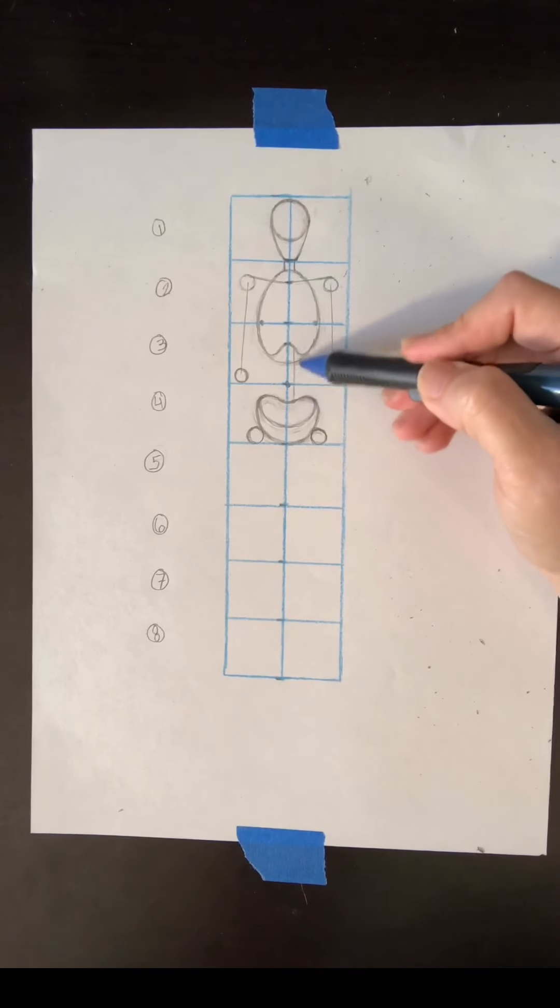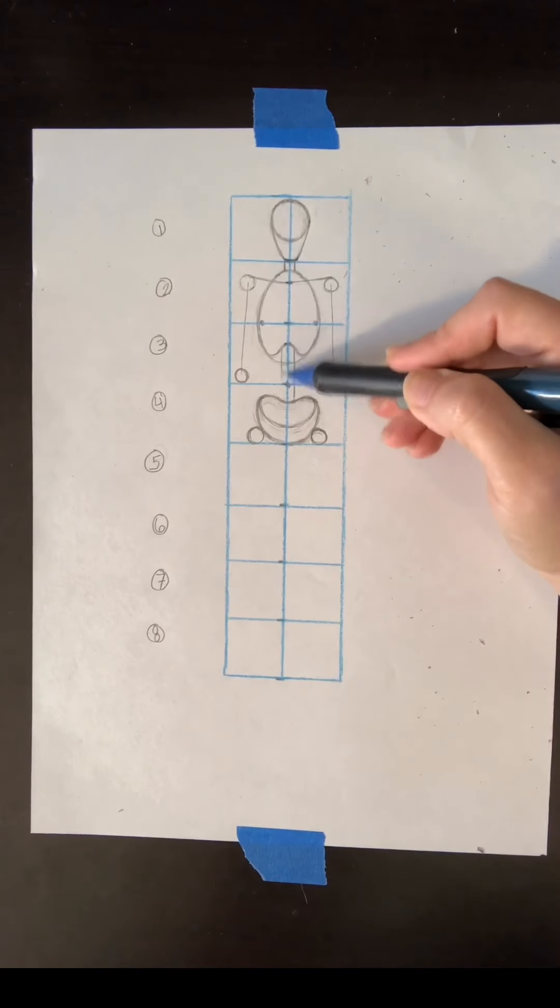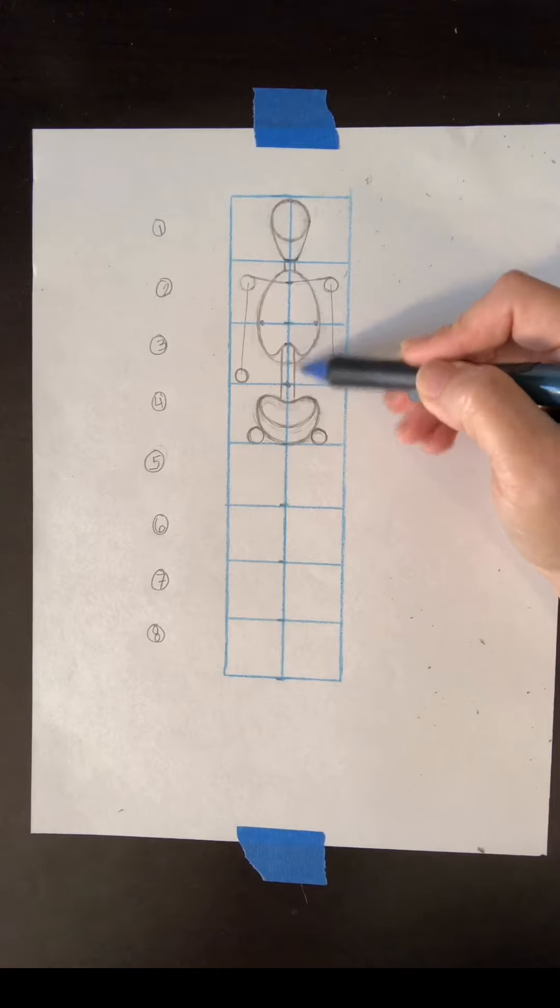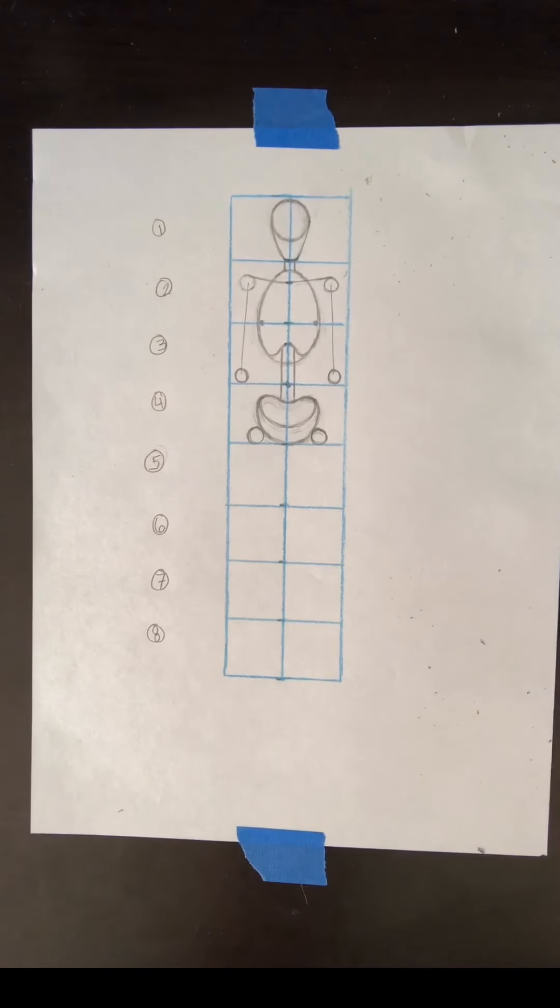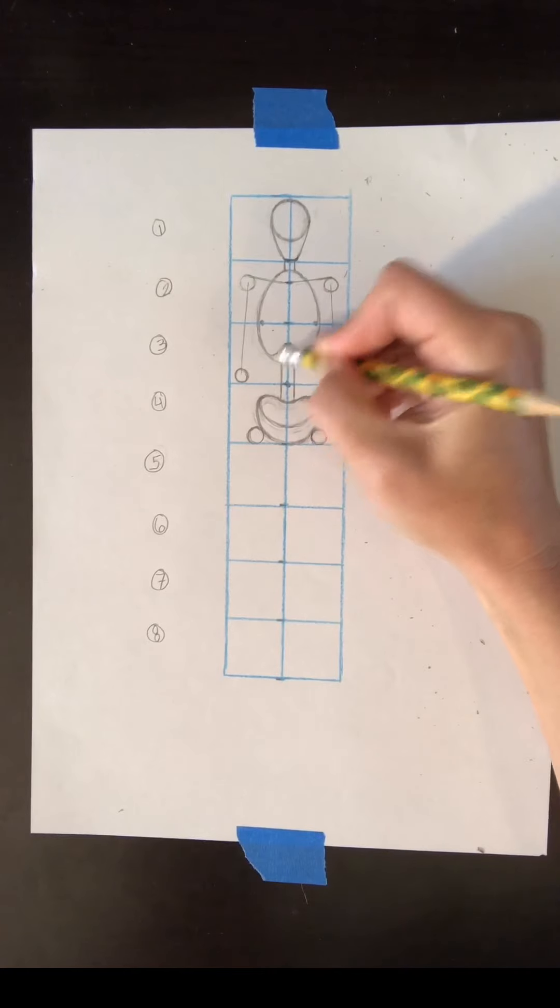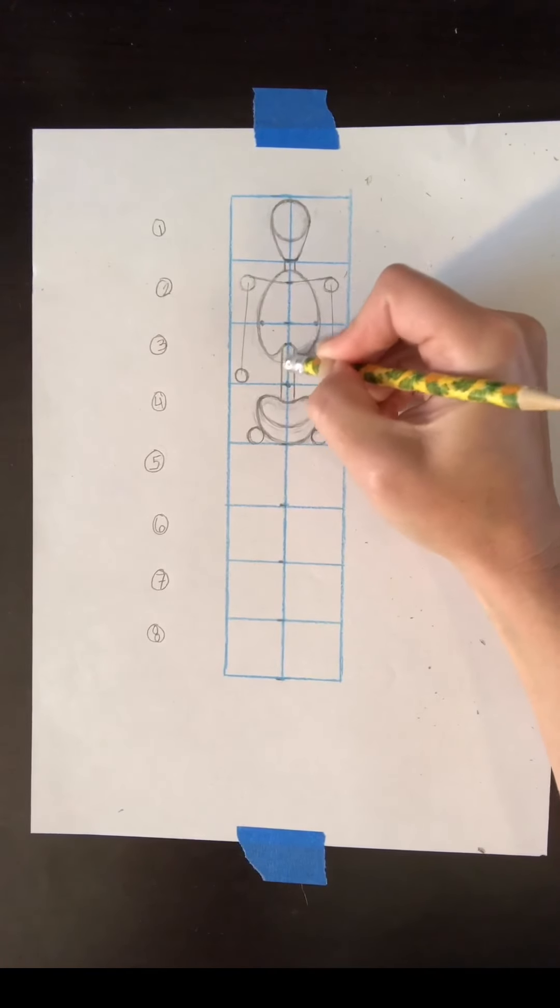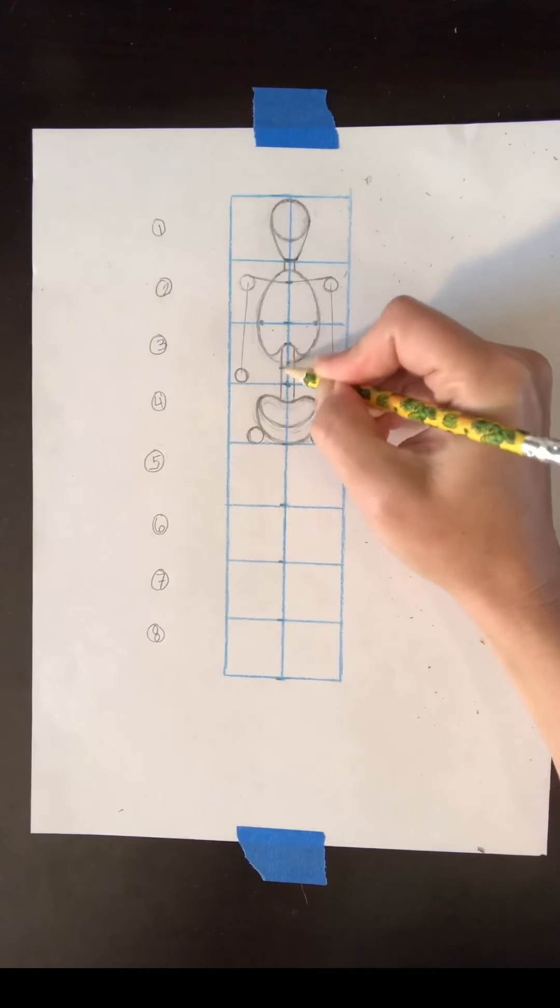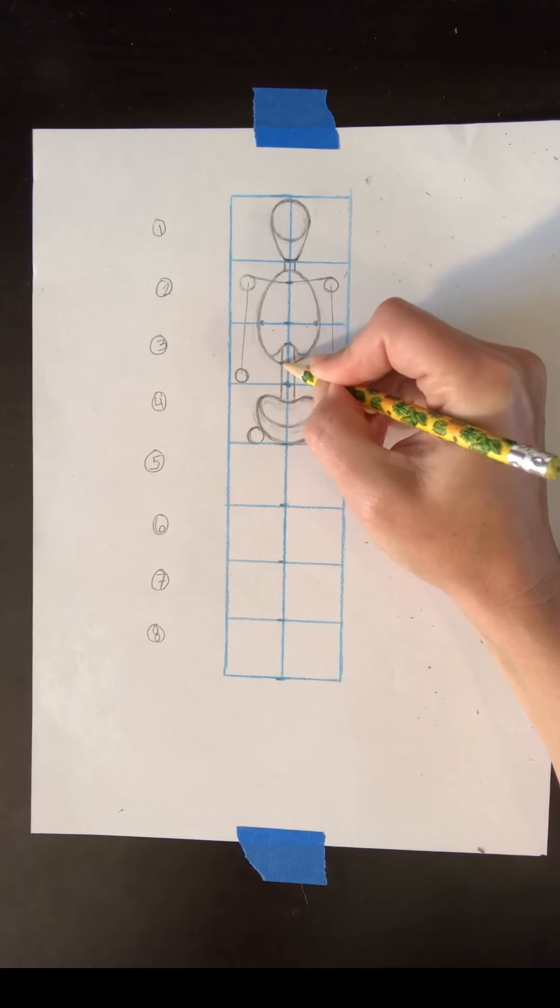And then here's my backbone, my spine. That's going to connect my torso to my pelvis. And I'm going to erase just the very bottom of my ribcage here so that it goes behind, because remember we said this is the back side of the ribcage that dips down.